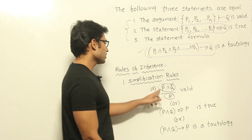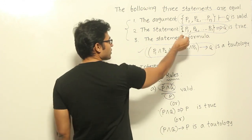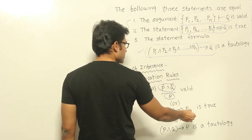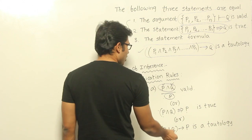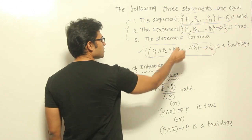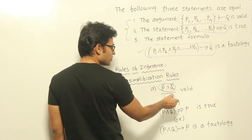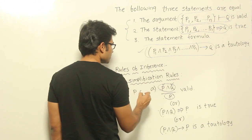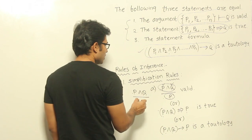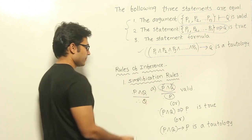So what you can derive is that P is true. How to represent it? You can use this representation, which means P∧Q tautologically implies P is true, or P∧Q implies P is a tautology. Either representation can be used. Now it is not just that you can derive P — you can also derive Q. If P∧Q is true, both P and Q have to be true, so Q is also true.